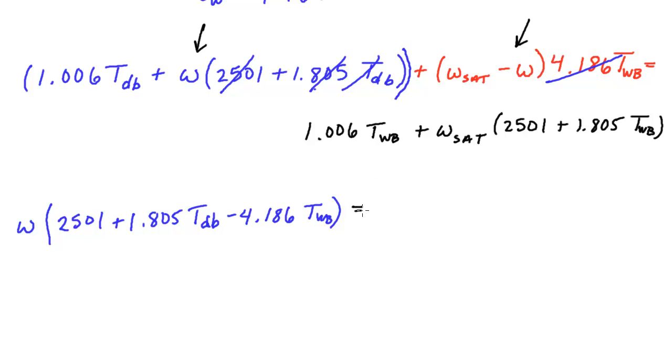So we'll have an omega and that's going to be multiplied by 2,501 plus 1.805 T dry bulb. But we also have this term here so we have to subtract out 4.186 T wet bulb. Let me mark off things I've taken care of. We've taken care of that term, that term with that one involved along with that. Now let me move some things over to the other side.